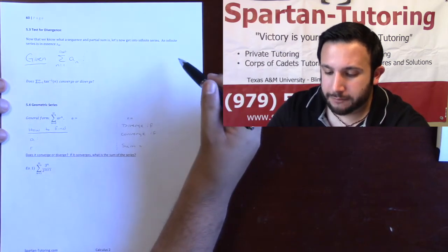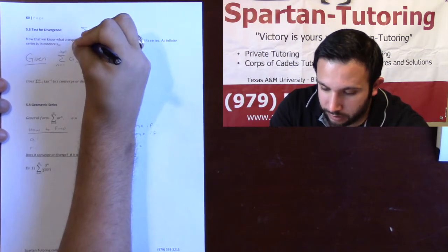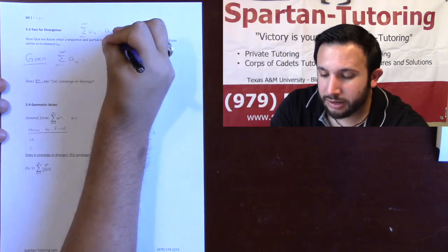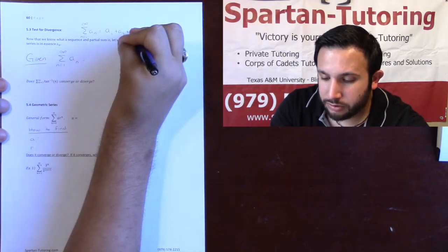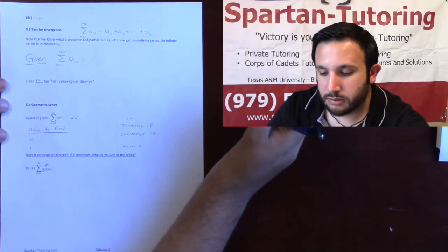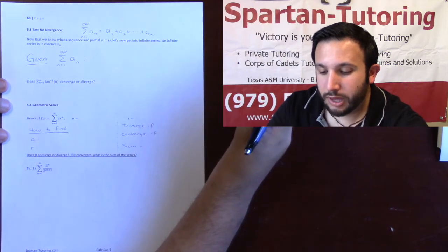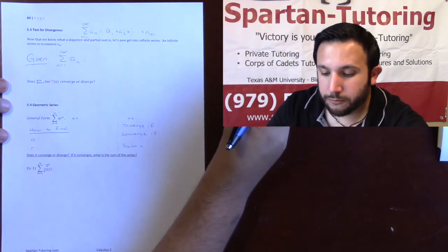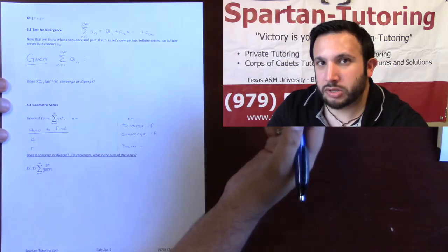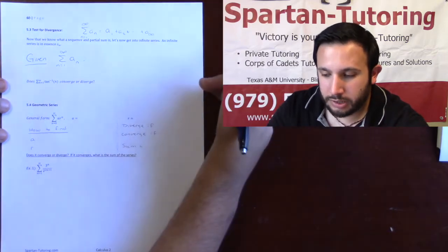What an infinite series is, as I kind of mentioned in the previous video — from whenever you have a sum from 1 to infinity — this is literally adding up every single term in your sequence. You take your infinite list of numbers and you add them together. From here, the test for divergence is to help us determine whether a series converges or diverges.